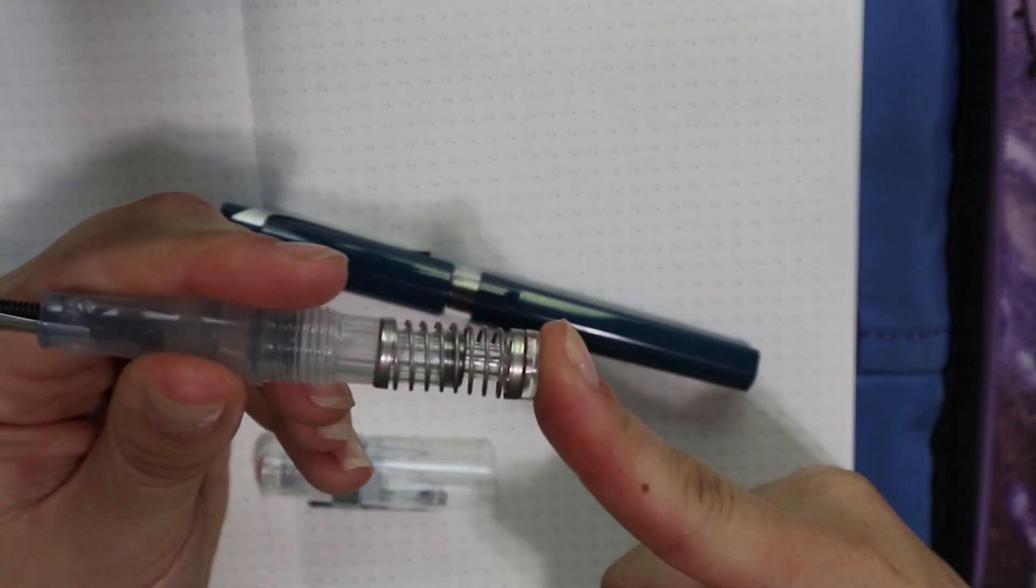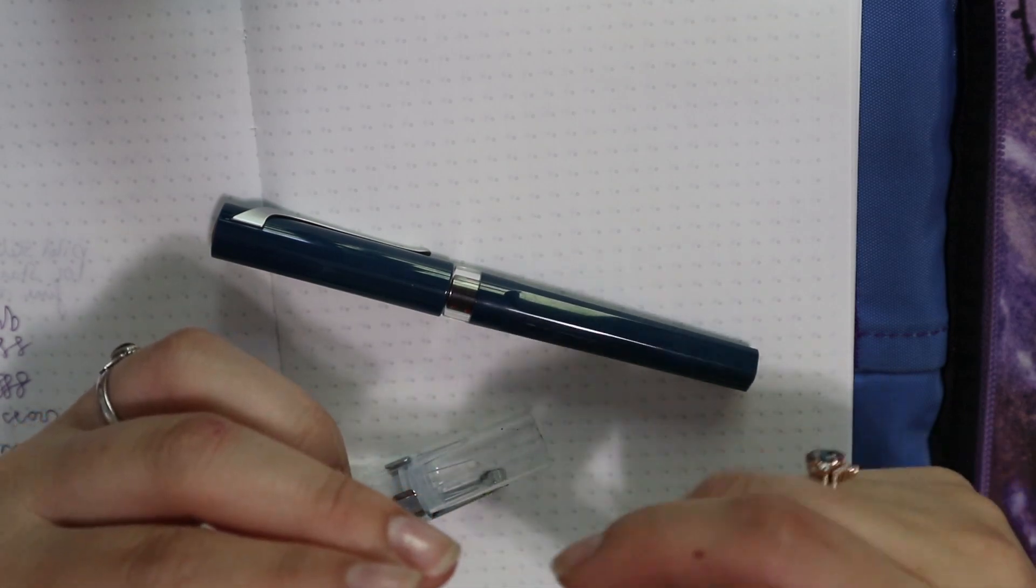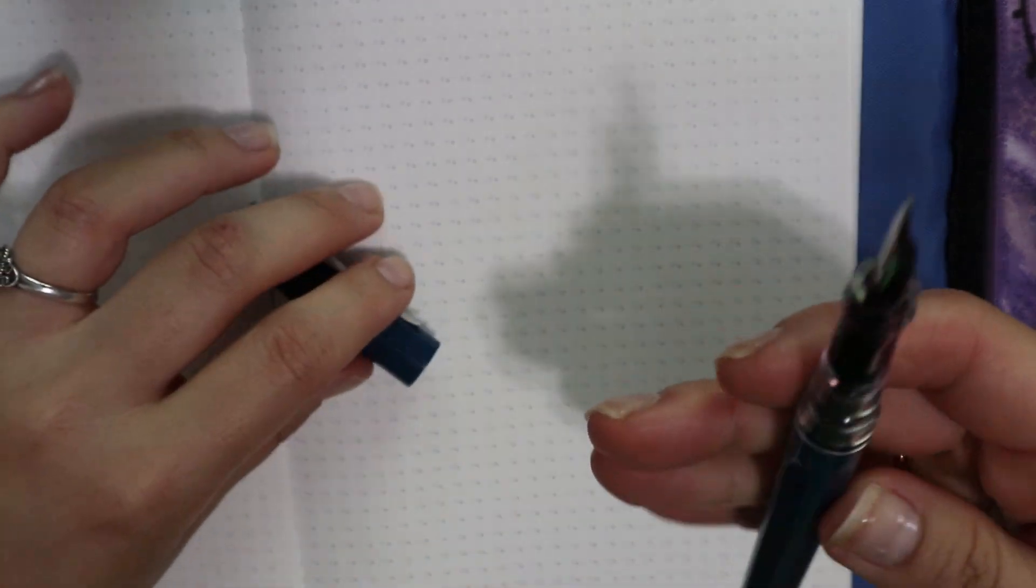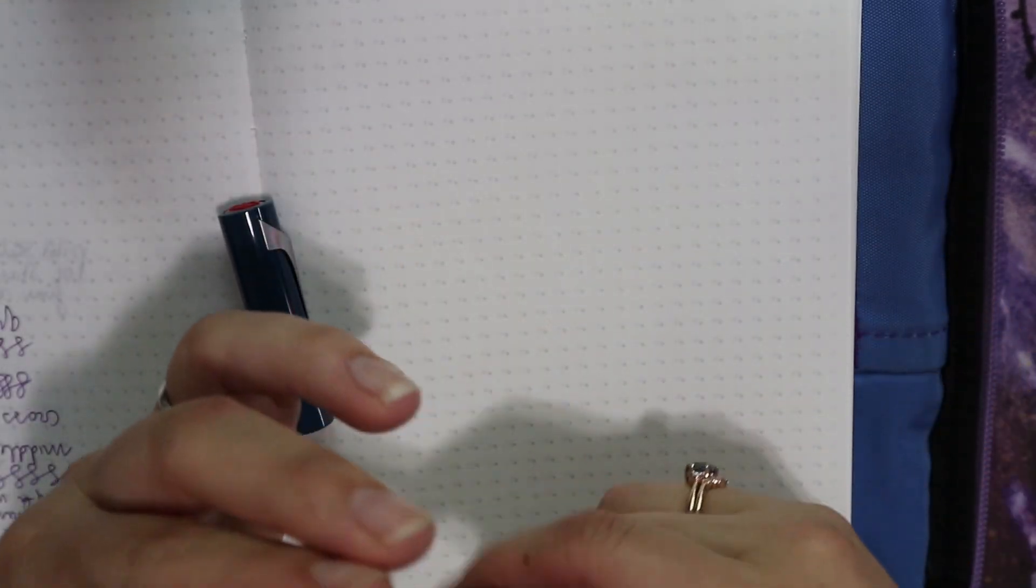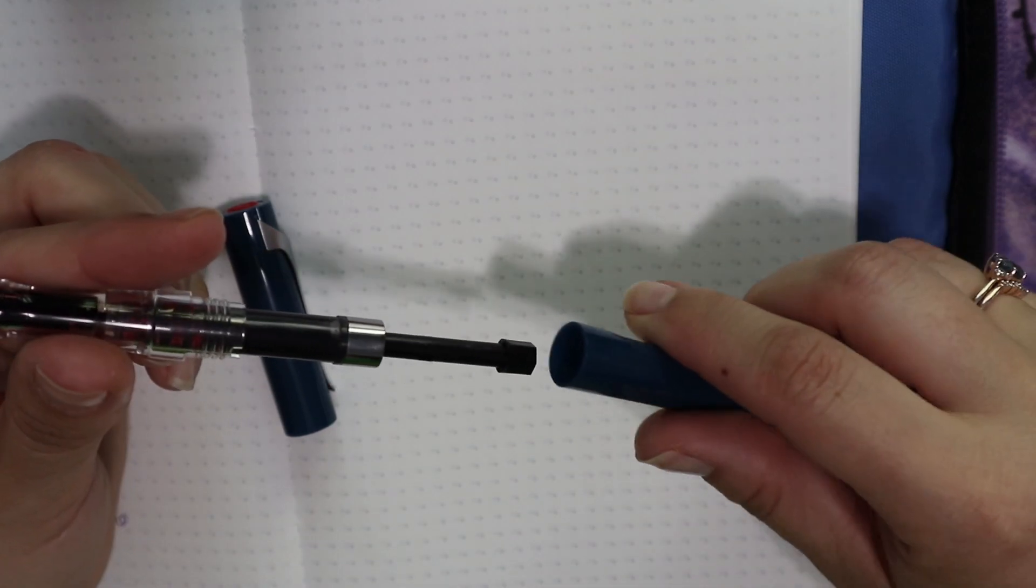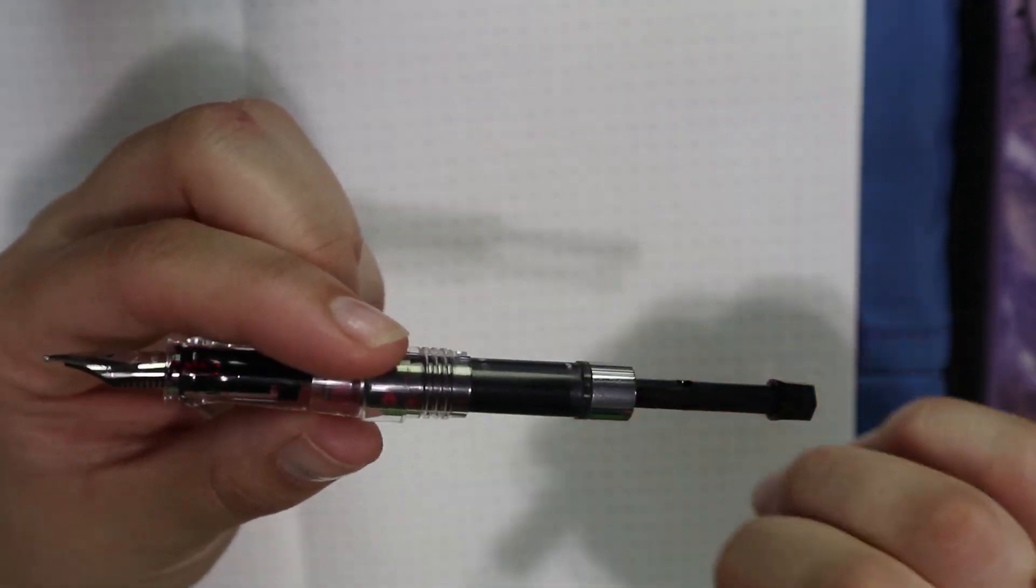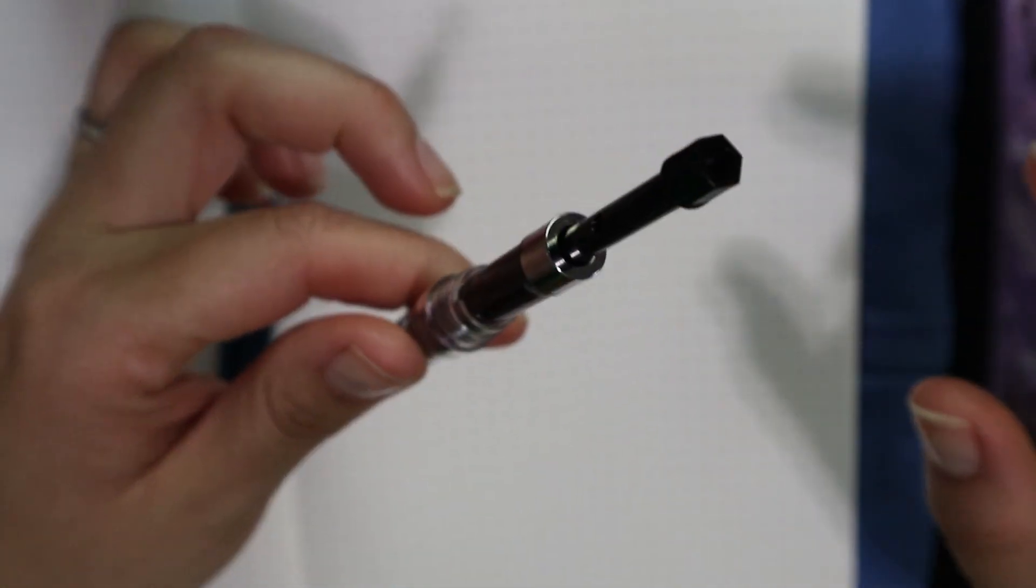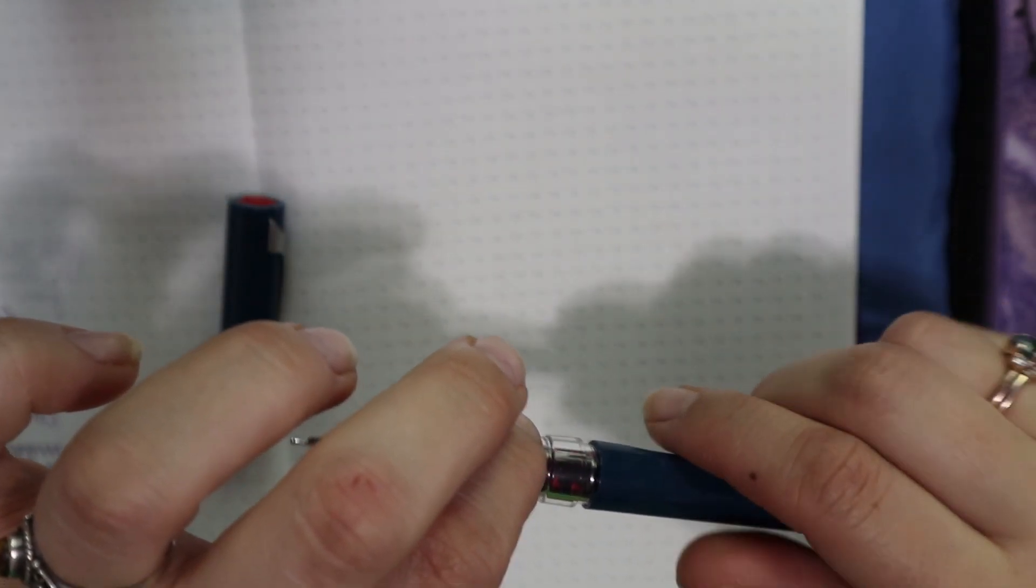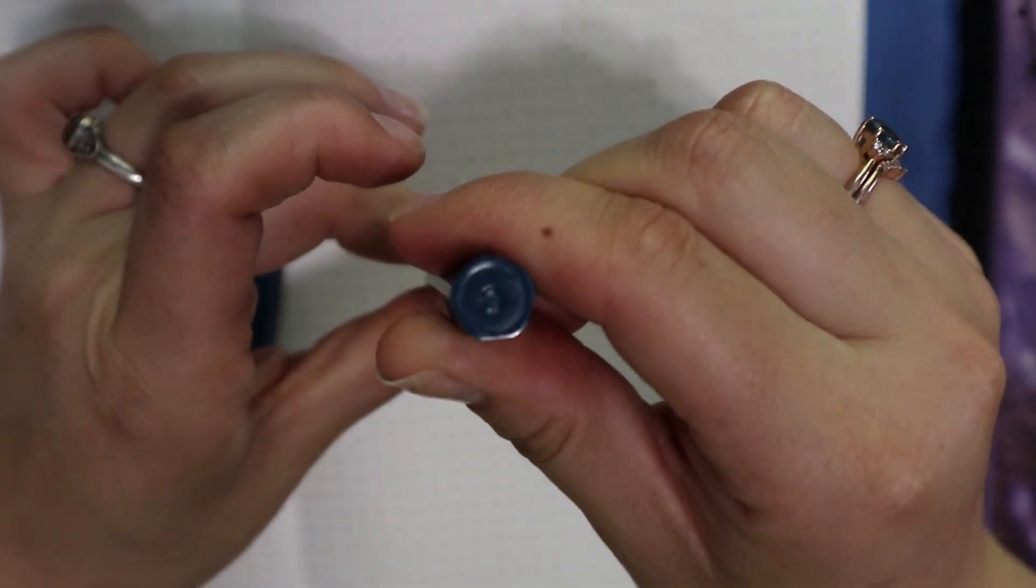and for the swipe, you can remove that converter and ink it in a different way. I think you could maybe eyedropper this pen. There doesn't seem to be any holes in there. Now, I don't know why you would do that, because the ink capacity here is ginormous. Like, this is a giant converter. I don't think you need to actually eyedropper it, but you could if you wanted to.